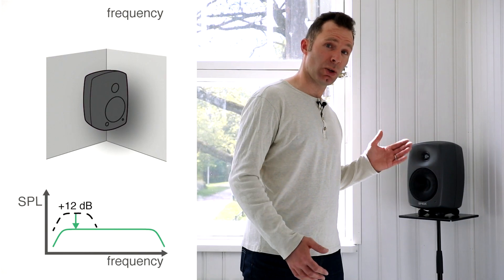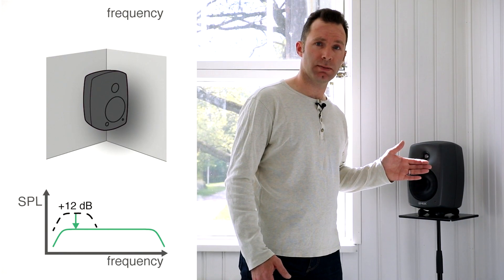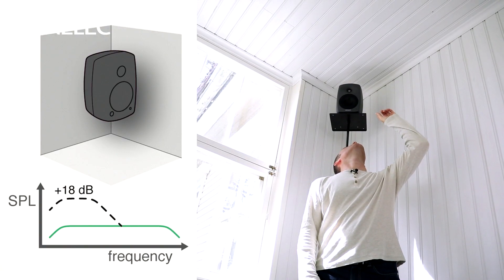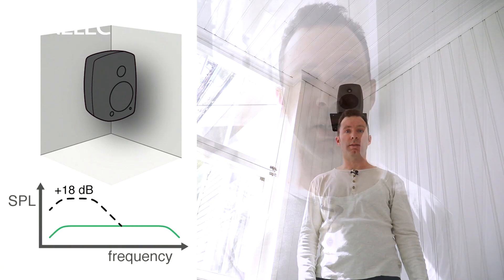With two walls making a corner the increase is 12 dB. Add the floor or ceiling, 18 dB.